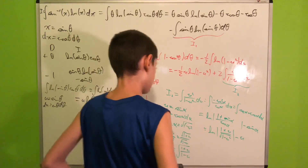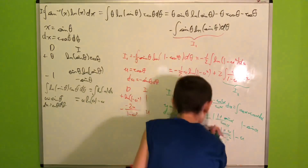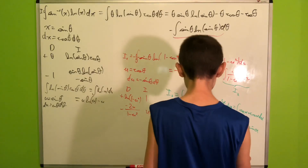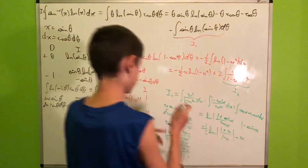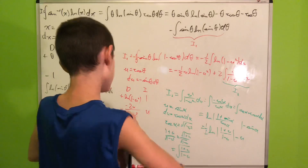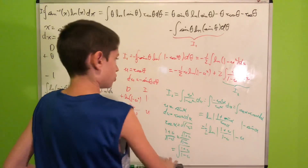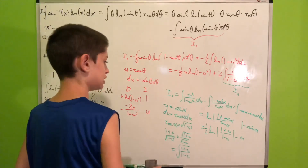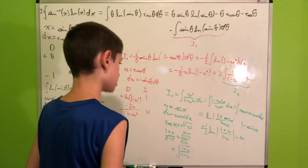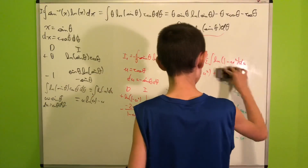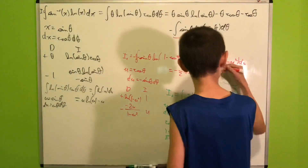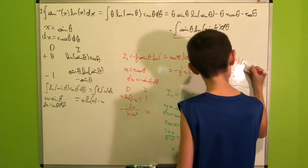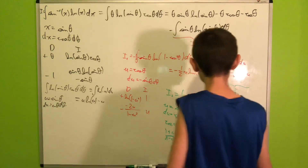We simplify the logarithm argument: (1 + u)/√(1 − u²) = (1 + u)/√((1 + u)(1 − u)) = √((1 + u)/(1 − u)). Factoring out the one-half from the square root, we can write this as ½·ln|(1 + u)/(1 − u)|. Plugging I2 back and multiplying by the factor of 2, we get ln|(1 + u)/(1 − u)| − 2u.